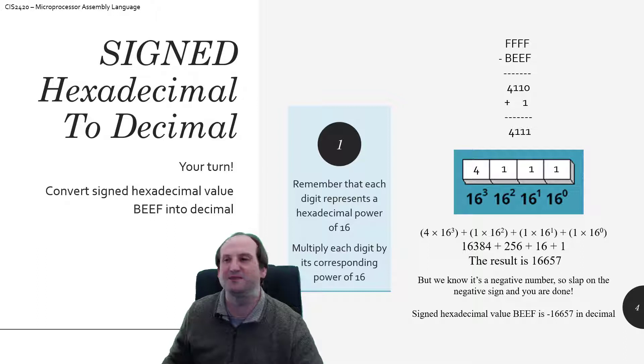So it ends up being 16,384 plus 256 plus 16 plus 1. So the positive magnitude ends up being 16,657.